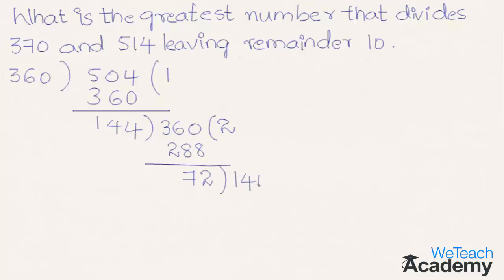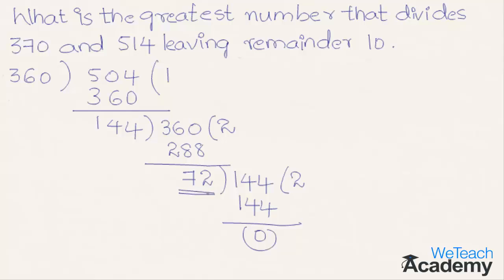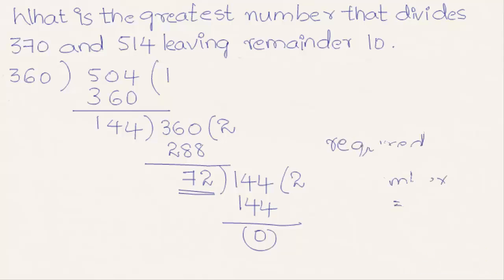Repeating the process, we get 144 divided by 72. Here 72 two times is 144, and we get the remainder 0. The last non-zero remainder, which is 72, is the greatest common divisor of 360 and 504. Therefore, the greatest number that divides 370 and 514 leaving remainder 10 is 72. Hence the required number is 72.